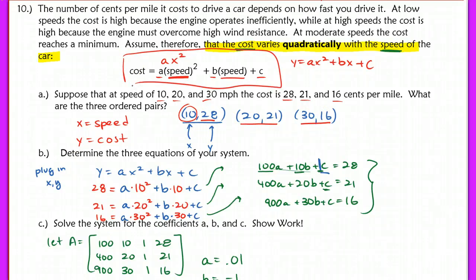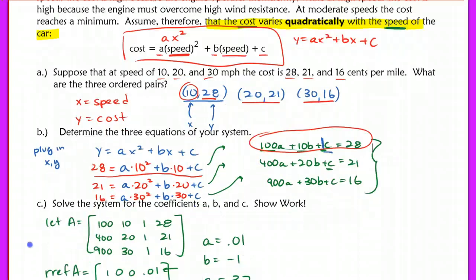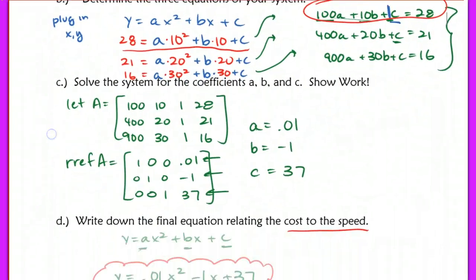This is the quadratic model they gave us, and we just plugged right into there using 10 as our x value, and y was 28. So that's how we got this first line here. We simplified so that we have it in a, b, and c. We repeated that three times so that we ended up with our matrix.